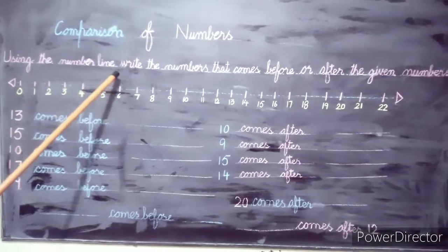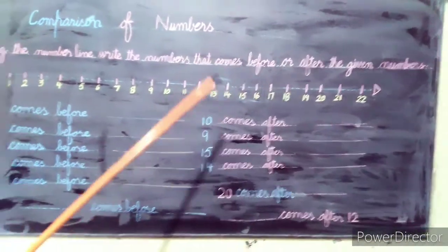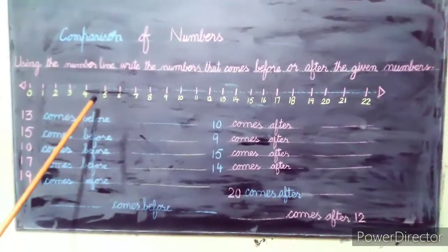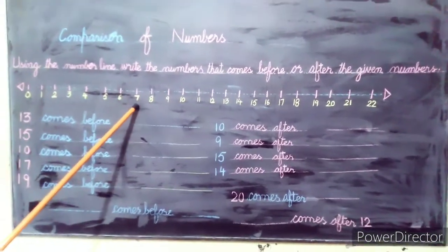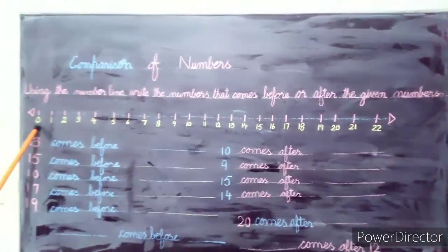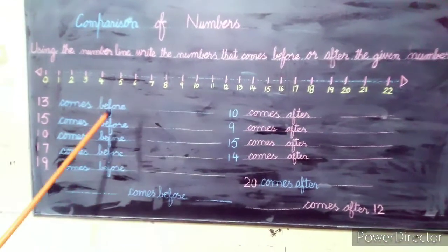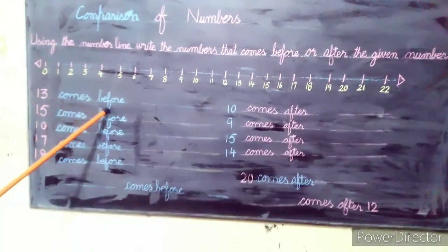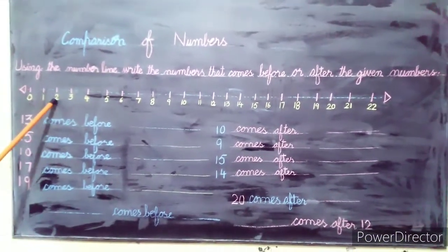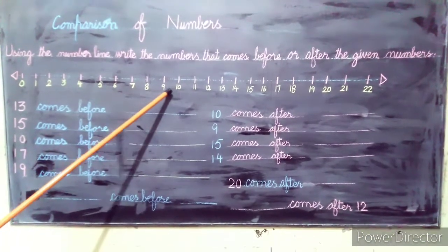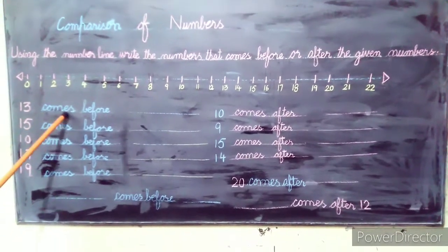Using the number line, write the numbers that come before and after the given numbers. To solve this, for the first question, number 13: let's count — 1, 2, 3, 4, 5, 6, 7, 8, 9, 10, 11, 12, 13. Now we are finding what comes before 13.